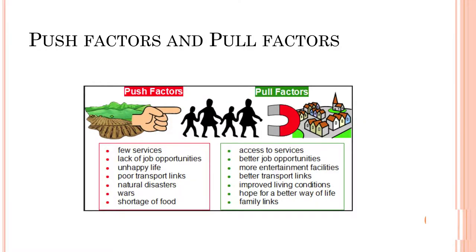Push factors are: few services, lack of job opportunities, unhappy life, poor transportation, natural disasters, wars, and shortage of food. Pull factors are: excessive services, better job opportunities, more entertainment facilities, better transport links, improved living conditions, hope for a better way of life, and family links.